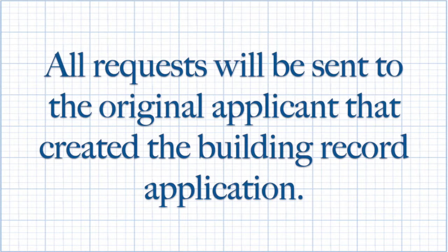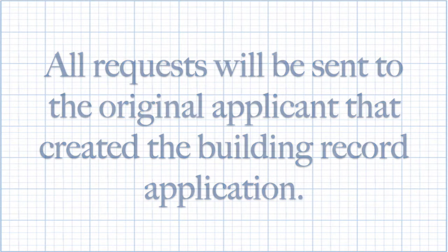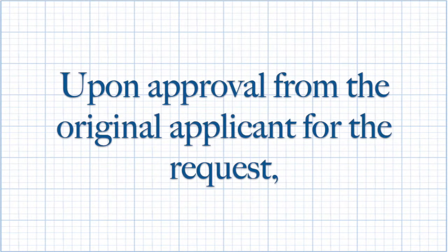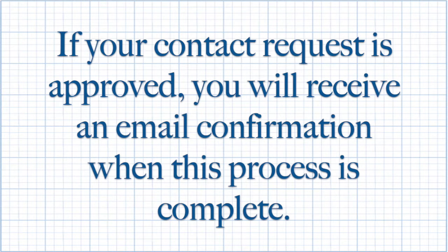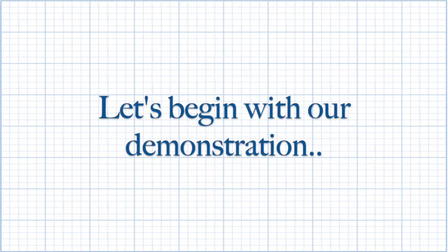All requests will be sent to the original applicant that created the building record application. Upon approval from the original applicant for the request, your contact information will be added to the project or projects you've requested. If your contact request is approved, you will receive an email confirmation when this process is complete. Let's begin with our demonstration.